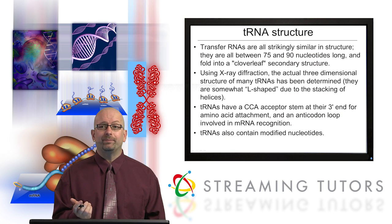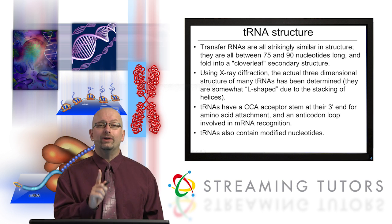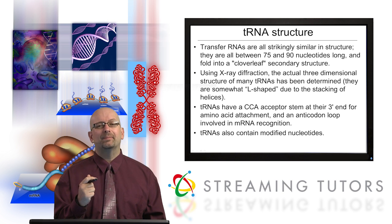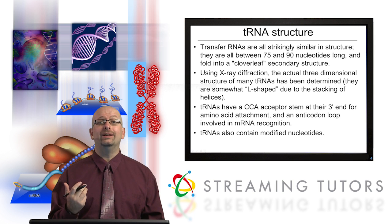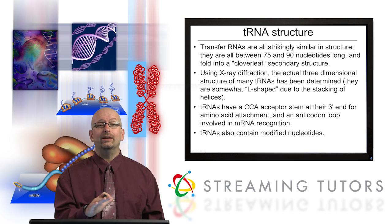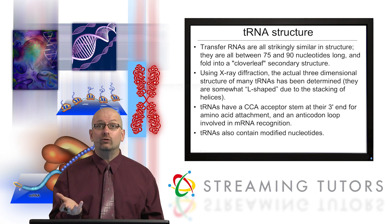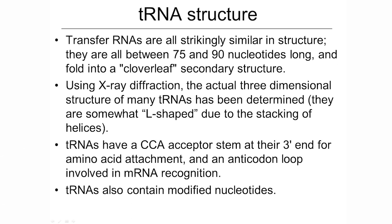We're going to finish off this part by looking at tRNA structure, and segue into translation, because tRNA is the decoder molecule. All transfer RNAs are strikingly similar in their structure, both secondary and tertiary. They're all relatively the same size — small, 75 to 90 nucleotides — and they fold into what's generally known as a cloverleaf secondary structure.